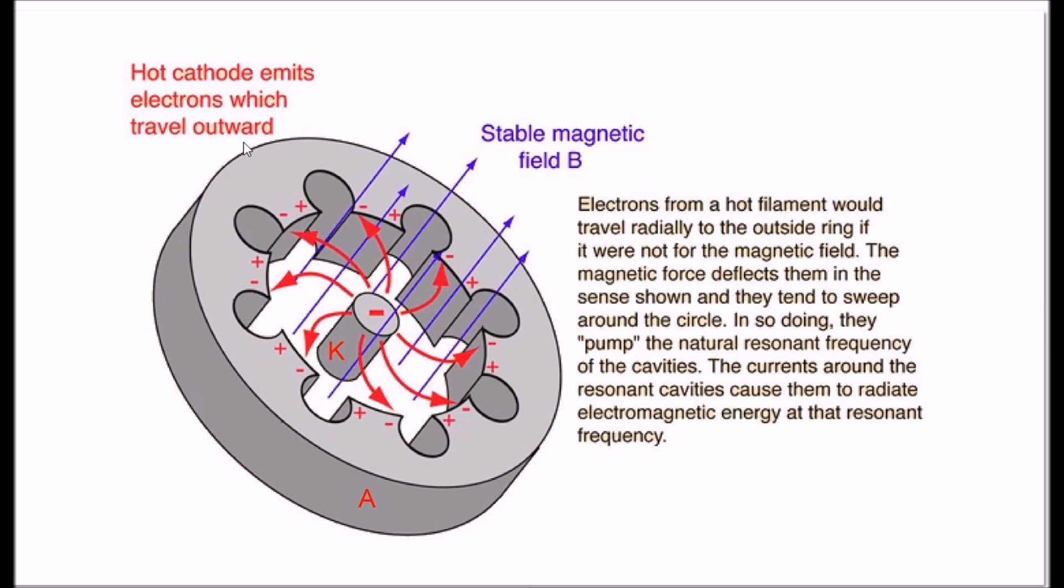Here is what your anode side of the magnetron really looks like. It's circular, has various cavities, and here is your cathode in the center. As it's heated and emits electrons, the two powerful magnets, both above and below the resonator cavity, confines the electrons into essentially a circular flow as shown here. The magnetic force deflects them in a sense shown that they tend to sweep around the circle.